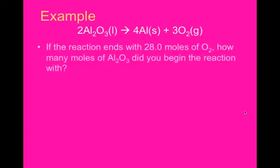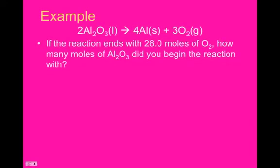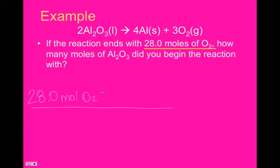Next example that I have, the reaction ends with 28 moles of oxygen. How many moles of Al2O3 did you begin the reaction with? Or, you could probably make more sense of this by saying, if I wanted to get 28 moles of oxygen, how many moles of aluminum oxide do I need to react? So, starting here at 28 moles of O2, so that's what's going to go in my first block.